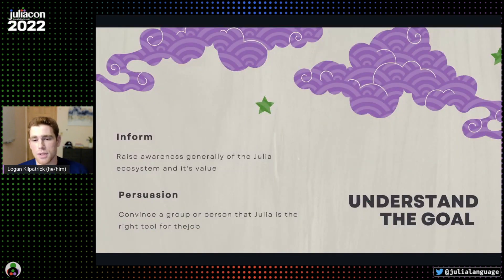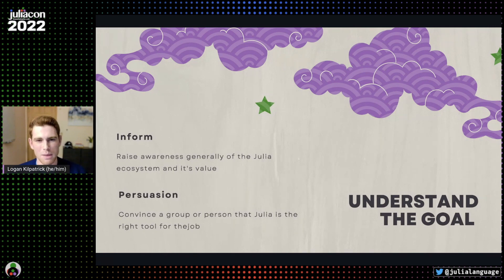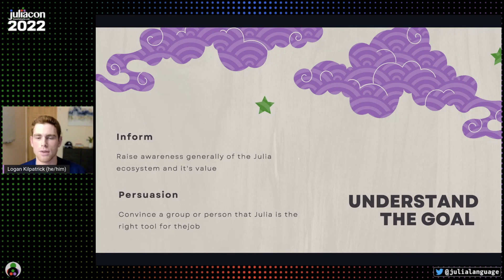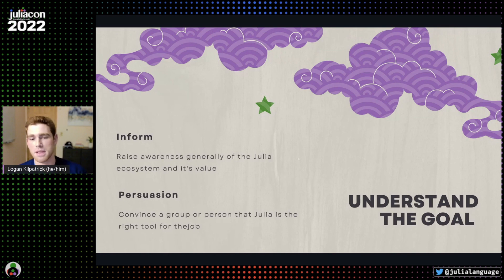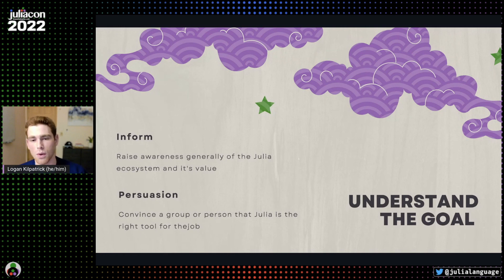Another huge piece of this is to take a step back and think about: what's the actual goal of this work that I'm doing? For me personally, I'm always trying to walk the fine line of — am I really trying to persuade people to use Julia? Probably not. I'm more interested in informing them about what are the different pieces of value they can get if they use Julia and get involved in the ecosystem. Hopefully that's persuasive enough on its own. But think about how to be tactical about what the goal of your work actually is.